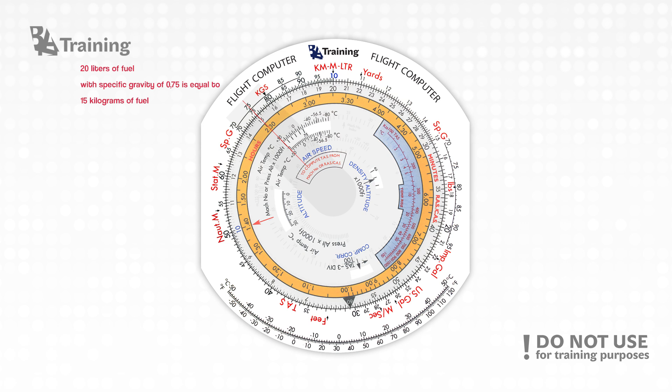If we desire to convert the same 20 liters of fuel with specific gravity of 0.75 to pounds, we have to rotate the cursor to 0.75 on the specific gravity scale and we can read that it is approximately equal to 33 pounds of fuel.